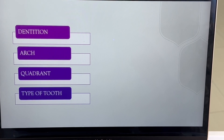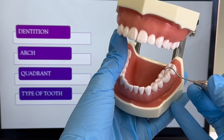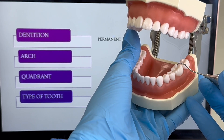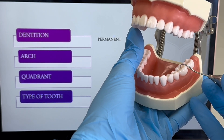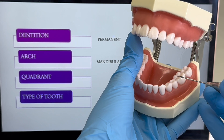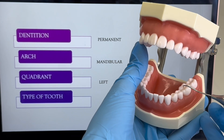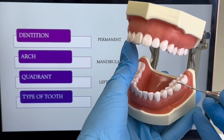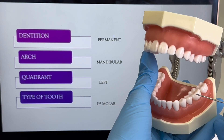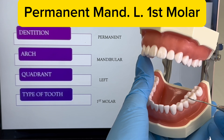Let's try another one. What dentition is it? It's permanent dentition. What arch is it? It's the mandibular arch — it's on the bottom. What quadrant is it? Remember the patient's quadrant — it's the left. And what type of tooth is this? It is the first molar. So how do we name this tooth? It would be: Permanent Mandibular Left First Molar.